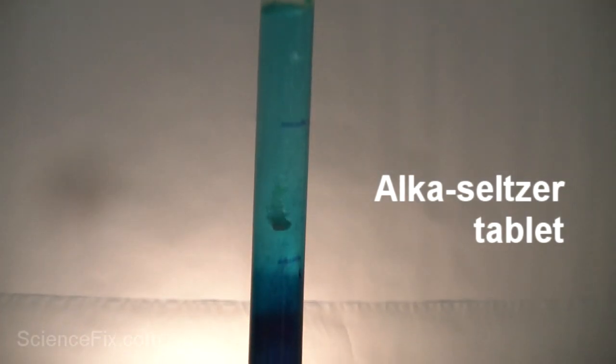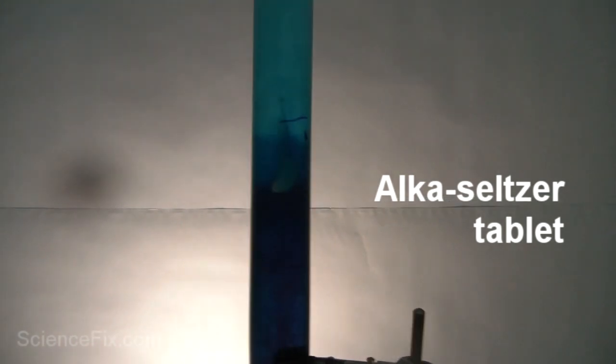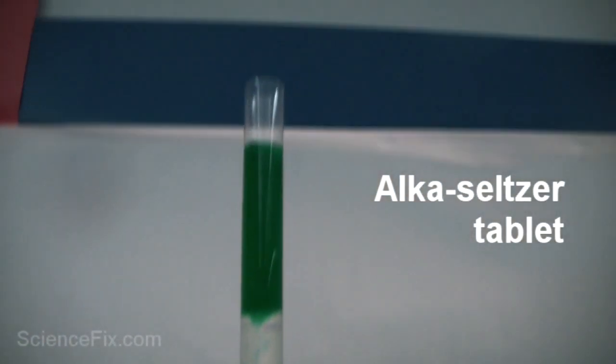Let's see what happens when we place an Alka-Seltzer tablet into the liquids. The Alka-Seltzer tablet is more dense than the isopropyl alcohol, the oil, and the water, and therefore it sinks in them. But notice once it gets to the bottom of the water, it goes straight back up to the top.